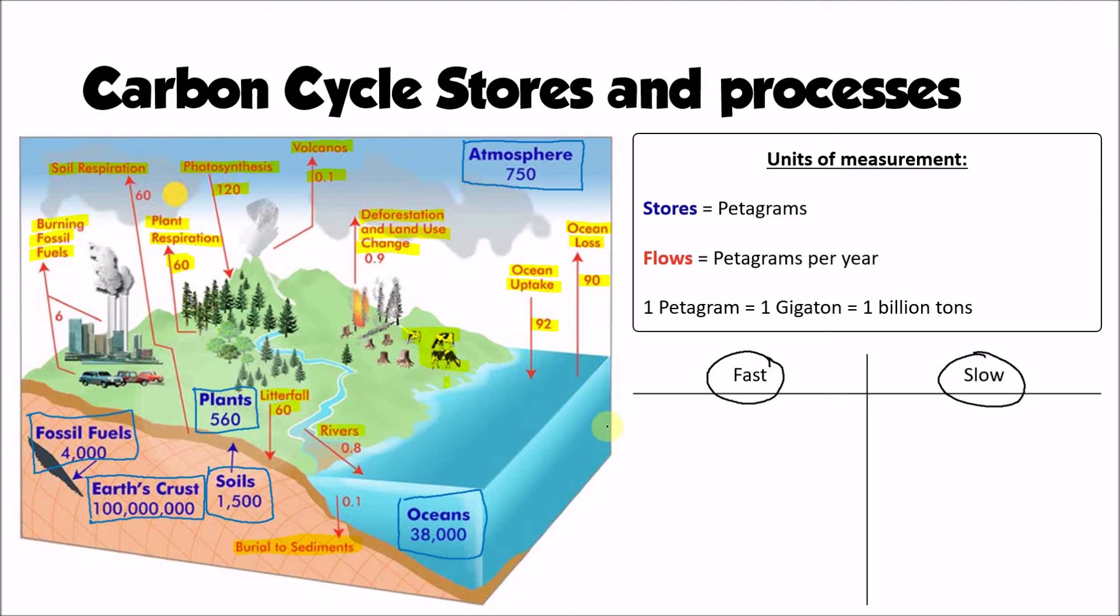So the fast carbon cycle, this is going to include anything that transfers carbon quite quickly back to the atmosphere or from the atmosphere. So photosynthesis is a good example of a process that's part of the fast carbon cycle. Combustion as well, respiration, deforestation and land use change. And finally also the ocean exchanges, the uptake or loss of carbon dioxide from the ocean. These processes are returning carbon to the atmosphere on the sort of timescales of days, weeks, months, years to move that carbon from one store to another.